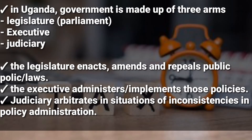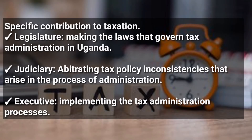Now let's look at the specific contribution of the three arms of the government to taxation. First is the legislature, which is the parliament — it makes laws that govern tax administration in Uganda. The judiciary is the URA; it is there to arbitrate tax policy inconsistencies that arise in the process of tax administration. The executive, which is the Ministry of Finance Planning and Economic Development, helps in implementing the tax administration.